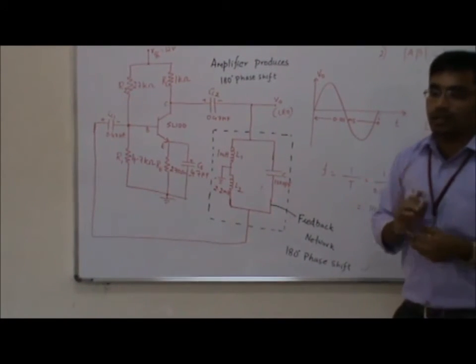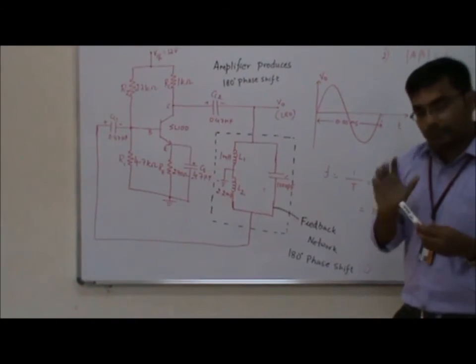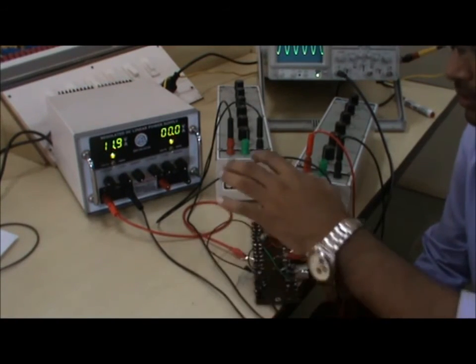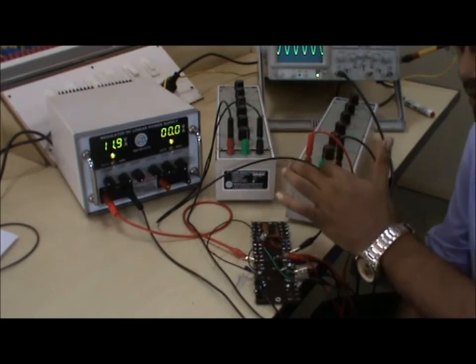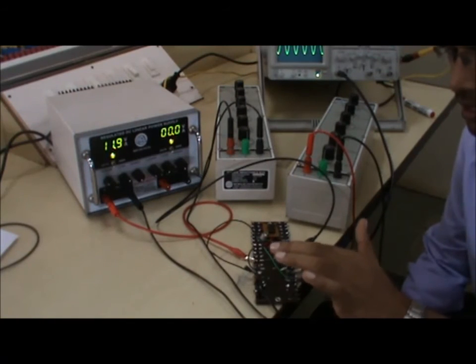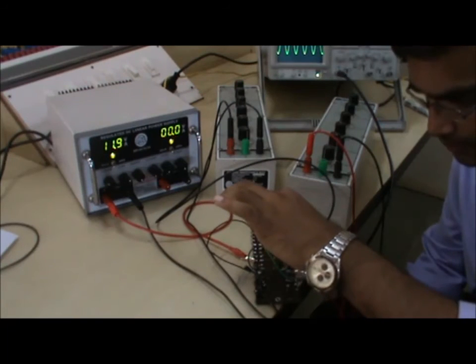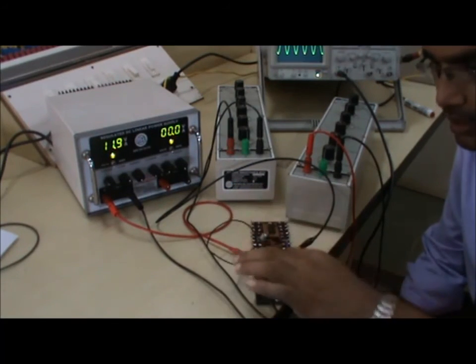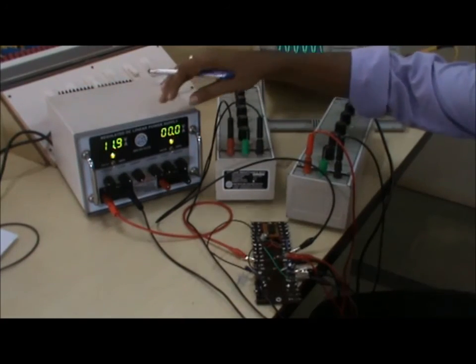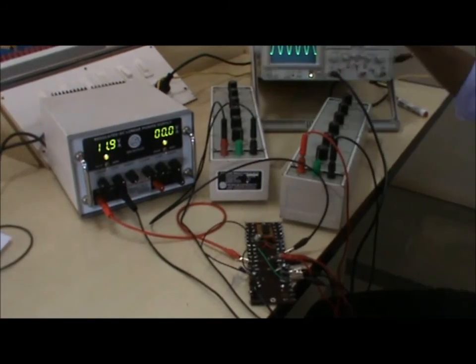The circuit is constructed on a tag board. The feedback network uses two inductances L1 and L2 connected parallel to capacitance C. The amplifier circuit uses an SL100 transistor with a voltage divider bias network. A 12-volt power supply is provided to the circuit.